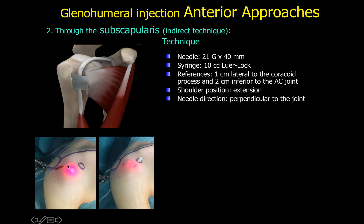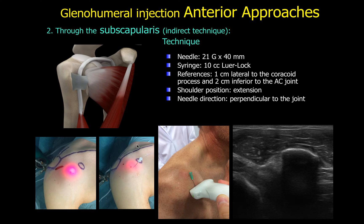A second anterior approach targets the superior part of the subscapularis, just distal to the interval. References here are one centimeter lateral to the coracoid process, about two centimeters from the AC joint. The needle is directed perpendicular to the joint, and the shoulder is in the same position. However, it is still not possible to adequately control needle visibility with ultrasound due to the perpendicularity of the needle to the joint.